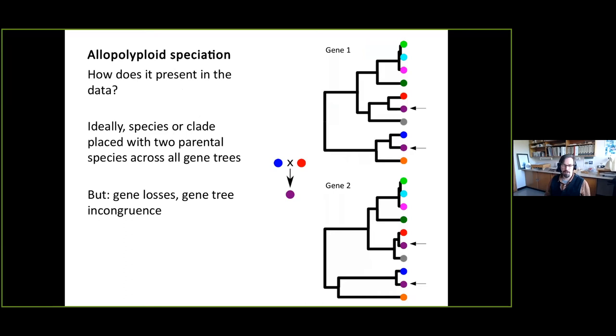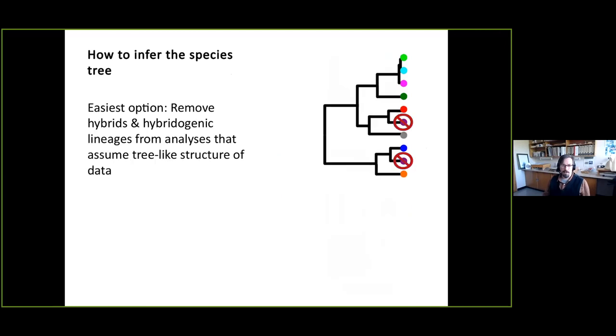And that already kind of indicates then how it would present in the data. Ideally, if we have a situation where an allopolyploid was created by species in two different clades, then we would find for every single gene tree two different copies in that hybrid or hybridogenic species. One derived from the maternal clade and the other one from the paternal clade. So gene after gene would find a situation where they're always sitting close together with their ancestors. Of course, that is again an idealistic assumption. In reality, we sometimes may not amplify all the copies or some genes may have been lost. And of course, all the other problems interfere with it. So we may see gene tree incongruence making it slightly harder to understand what is going on.